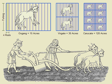1 international acre is equal to 0.40468564224 hectares. 1 United States Survey Acre is equal to 0.404687261 hectares. 1 hectare is equal to 2.47105 acres.